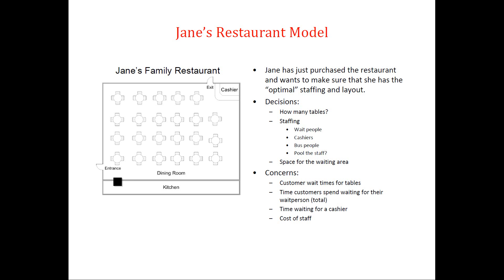After the customers are seated, a wait person takes the order and takes it to the kitchen. Once the order is ready, a wait person — who does not have to be the same person who took the original order — takes the food to the customers and the customers eat. When they are done, they go to the cashier. If there is a line, they wait in the queue; otherwise, they make the payment and then leave the restaurant.